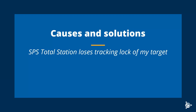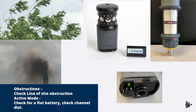The next problem is if the SPS Total Station loses tracking lock of your target. This could be due to obstructions. Check the line of sight from your prism to your total station to make sure there's nothing getting in the way — this could be tree branches or vegetation, particularly on windy days, smoke or dust from nearby machinery, or traffic and pedestrians walking or parking vehicles in the way.